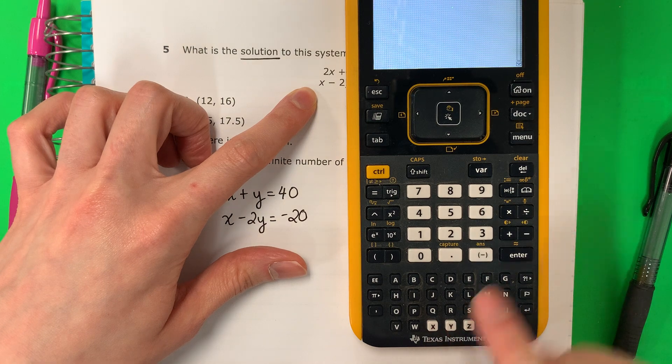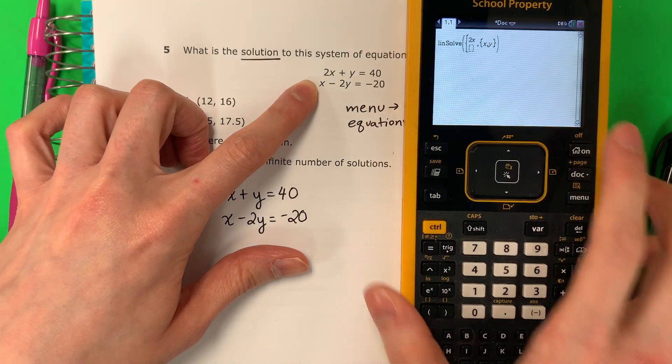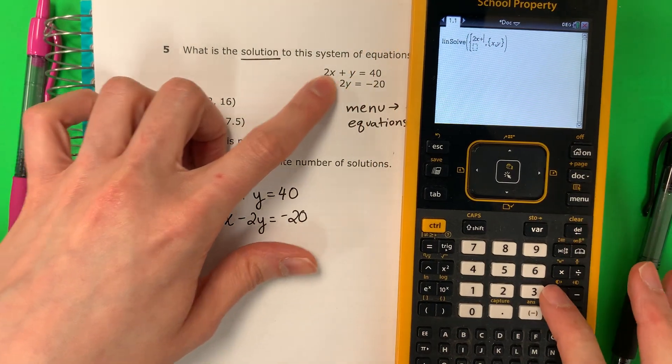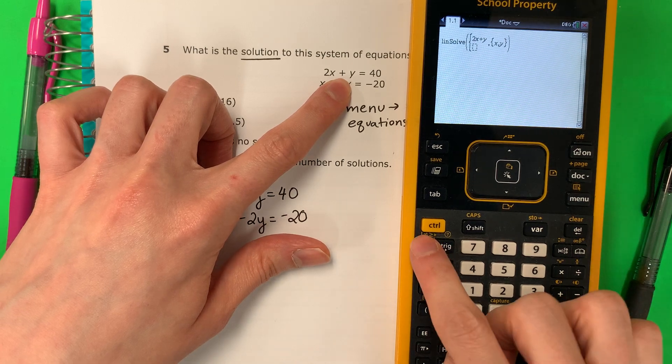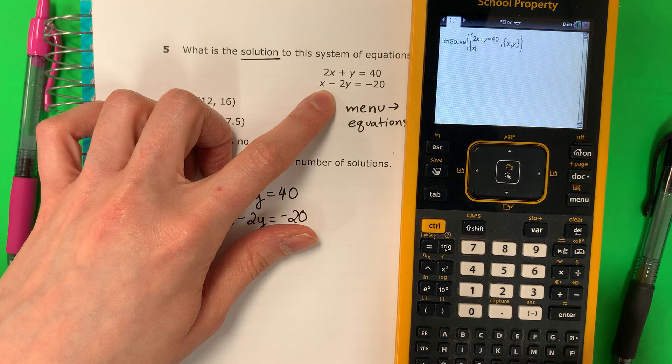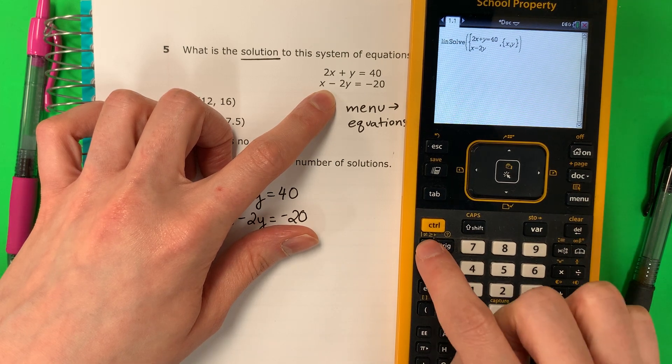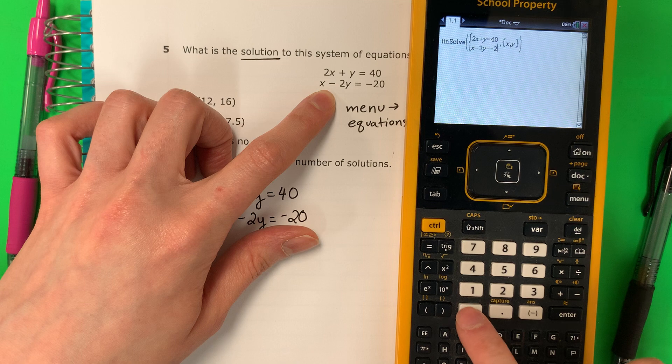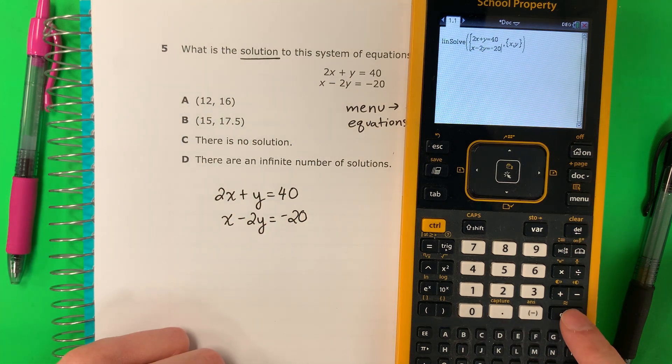So 2x plus y equals 40. Then go down, baja. X minus 2y equals negative 20. And then you're going to go ahead and push enter.